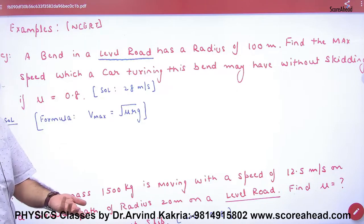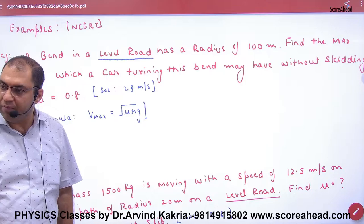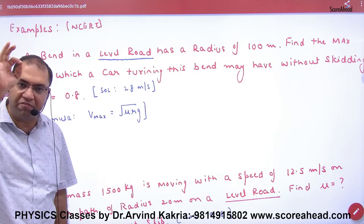Mu is given. Under root of mu rg, mu put, r put, g put. What point is clear? Which formula will we apply?